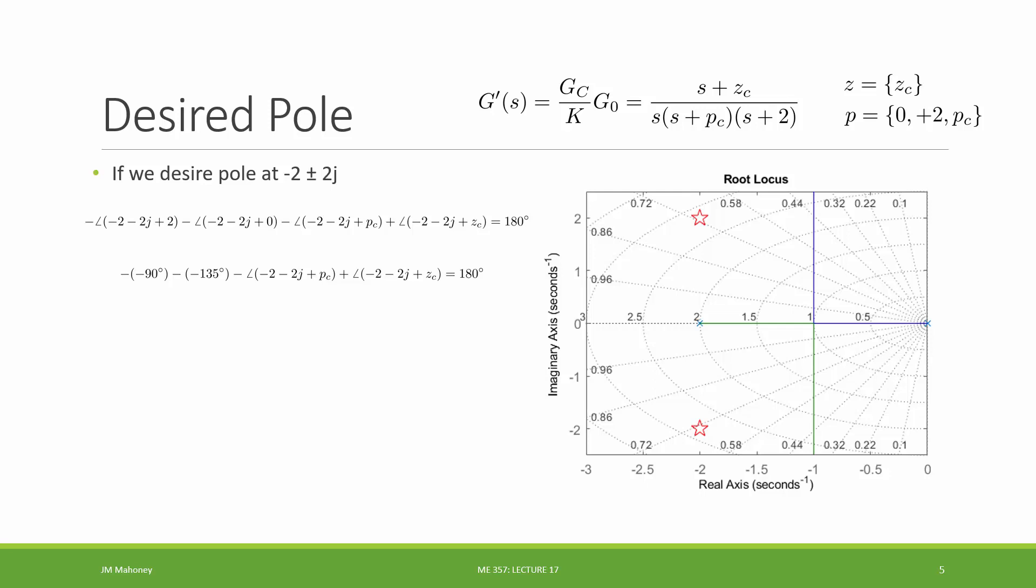And then I'm left with the angle for using the pc term and the zc term because at the moment I don't know those as numbers. But similar procedure as what I saw last time, I can move my constants to my right-hand side. Now, in order for negative 2 minus 2j to appear on the root locus we're going to create for this g prime, the sum has to be an odd multiple of 180. So in this equation right now, I just started by setting it to 180 degrees.